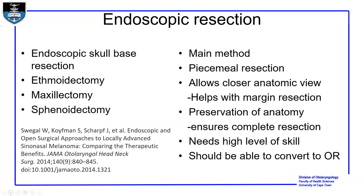Endoscopic resection — which can be an endoscopic ethmoidectomy, maxillectomy, or other procedure depending on tumor extent and location — is the main method of resection. It is a piecemeal resection, which initially people were skeptical of, believing complete margins required en-bloc resection. However, it has been found that endoscopic resection allows a closer anatomic view of the tumor, helping with margin resection. You do need a high level of skill, and you should be able to convert to open resection if needed.